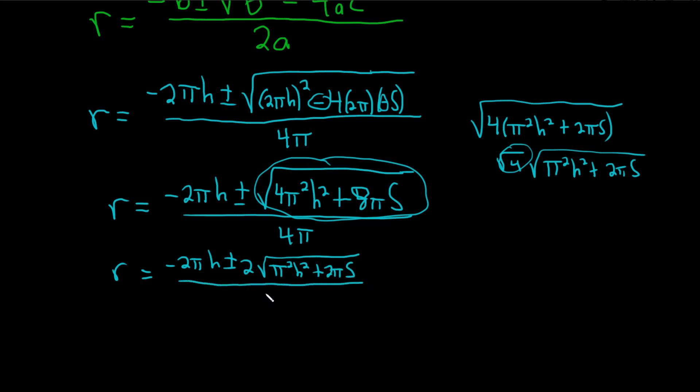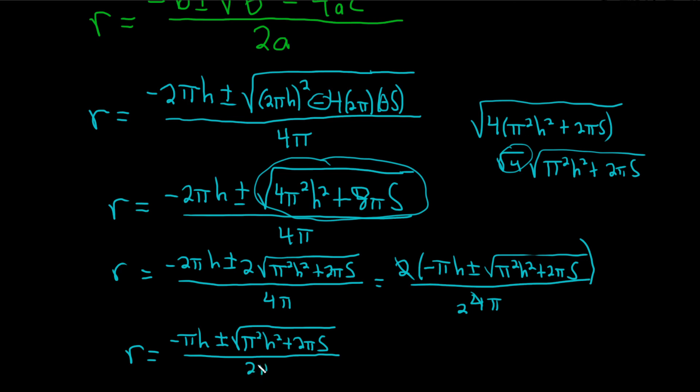And that's all divided by 4π. Now you can actually factor out a 2 in the numerator: 2(negative πh plus or minus square root of π²h² plus 2πs) all over 4π. And then you get some cancellation. So the final answer would be r equals negative πh plus or minus square root of π²h² plus 2πs, all divided by 2π. And that would be the final answer. Quite a bit of work. I hope this video has been helpful.